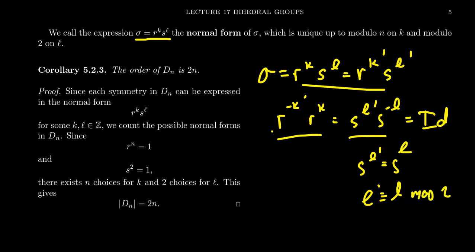The only way that a power of s can coincide with a rotational symmetry is if it was the identity. So if it's the identity, that means the powers of s combine together to get some even number. We have to have that s to the l prime is equal to s to the l, so that s to the negative will be the inverse of s to the l prime. So this tells us that l prime is congruent to l mod 2.